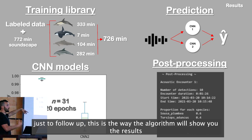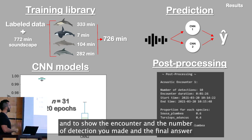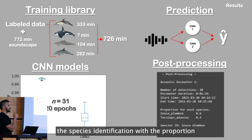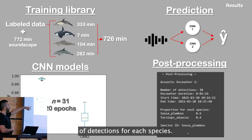This is how the algorithm shows you the results. It will show you the encounter, the number of detections made, and the final answer — the species identification with the proportion of detections for each species.